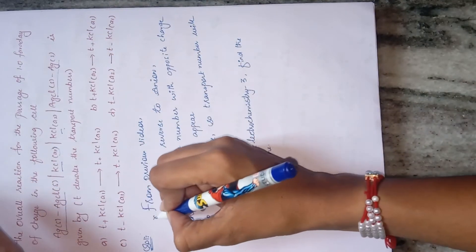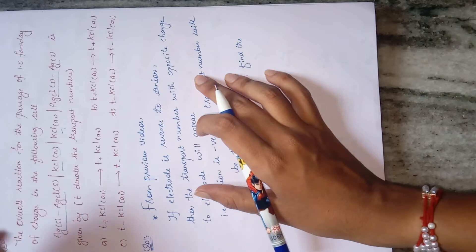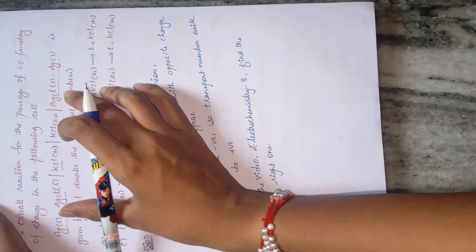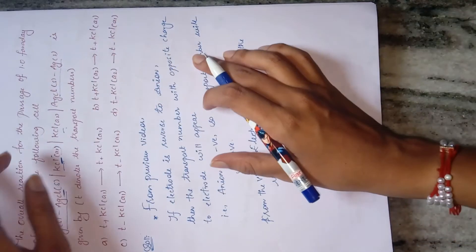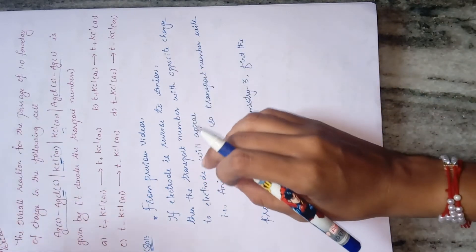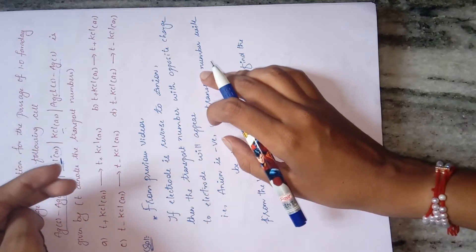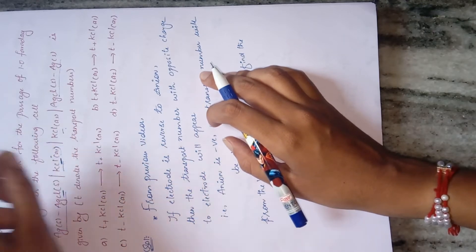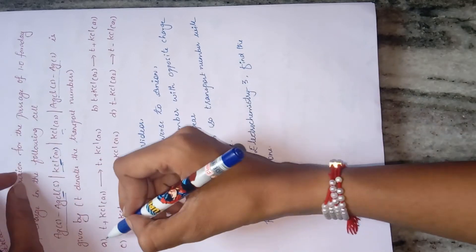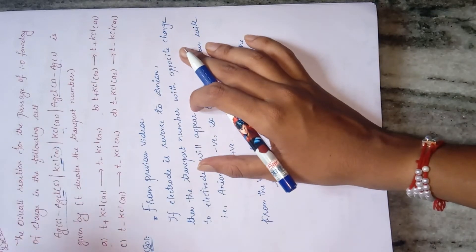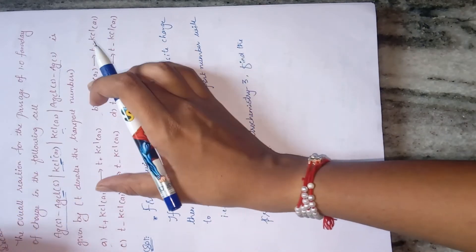One important note: if your electrode is responsive to the anion — as in this case with AgCl where chloride is the anion — then the transport number with opposite charge to the electrode will appear. Since the anion is negative, the transport number will be positive. This tells you the answer is either A or B, not C or D. Please calculate the exact answer from the electrochemistry 3 video.